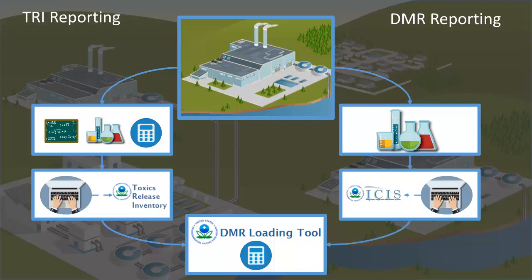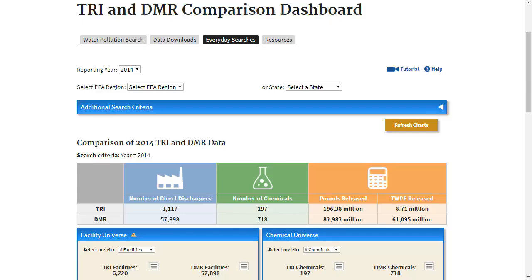EPA's DMR Pollutant Loading Tool then uses the ICIS-NPDES DMR data to calculate annual pollutant loadings. For a given year, we can compare estimates of discharges that facilities report on their TRI forms and on their DMR forms. By overlaying the TRI and DMR data, the dashboard provides users a more comprehensive understanding of reported discharges. You can examine the differences to further investigate how facilities estimate their TRI releases and to discover potential reporting issues related to either program.